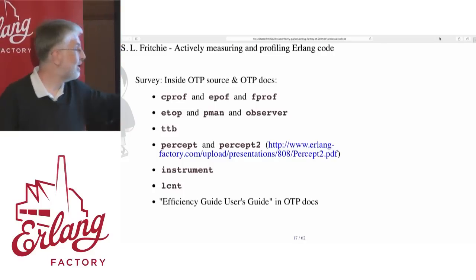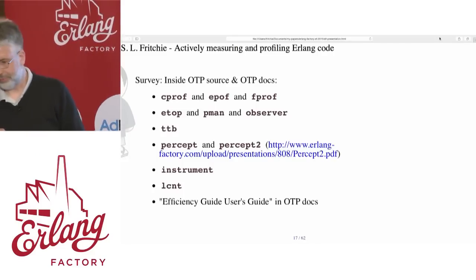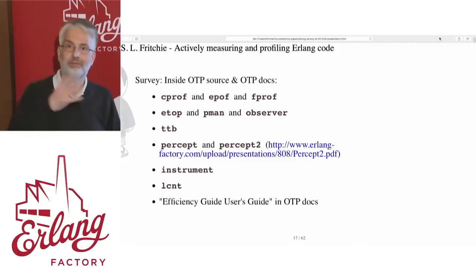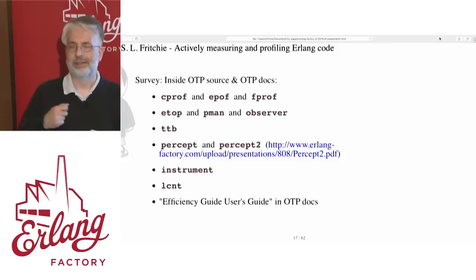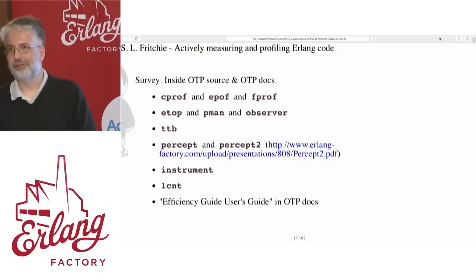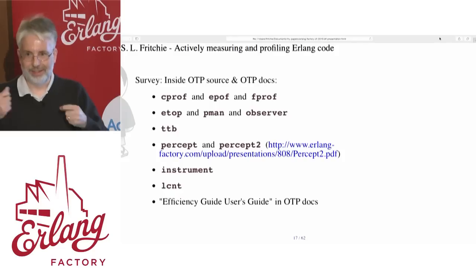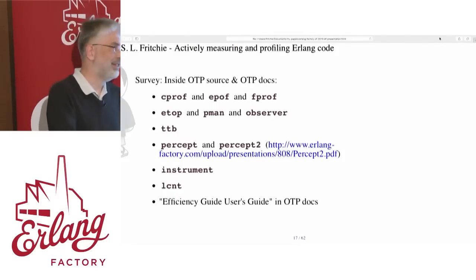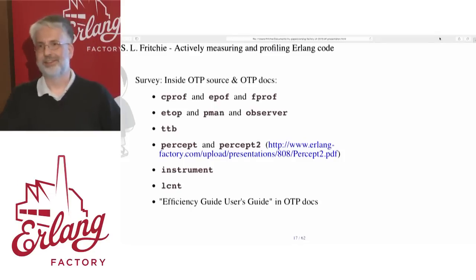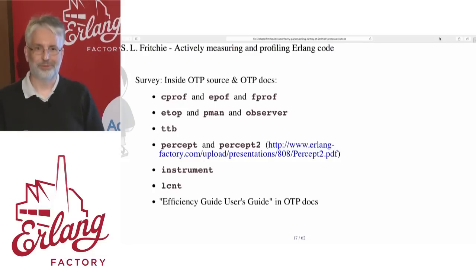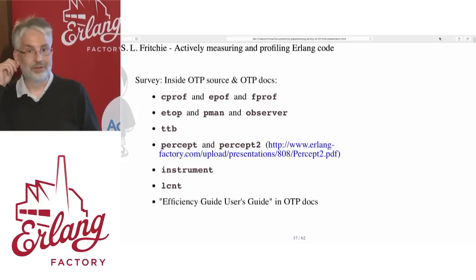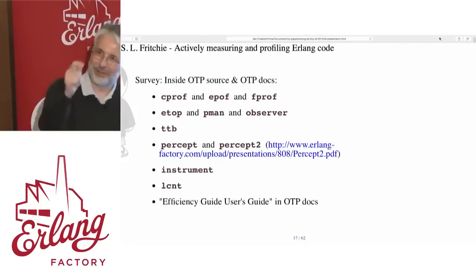Some of these measure activity by Erlang code more directly. Instrument is for looking at memory allocator activity inside the virtual machine. The lock counter is for looking at data structures in the virtual machine that still use locks. Since each iteration now with 16, 17, and 18 are using fewer and fewer lock-based data structures, that tool — I don't know what you're supposed to use for looking for contention on the lockless ones. Gut feeling? Guessing? Don't do that.